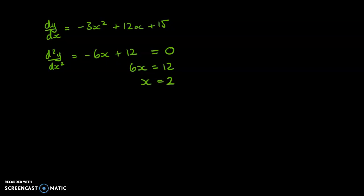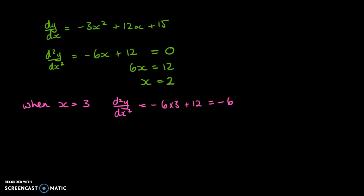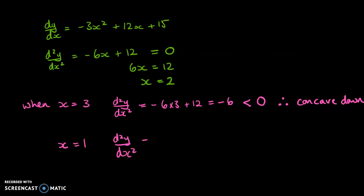Now we need to figure out what's happening on either side of x = 2. Testing x = 3: the second derivative equals −6, which is less than zero — therefore it is concave down. Testing on the other side with x = 1: d²y/dx² equals 6, which is greater than zero — therefore it is concave up.